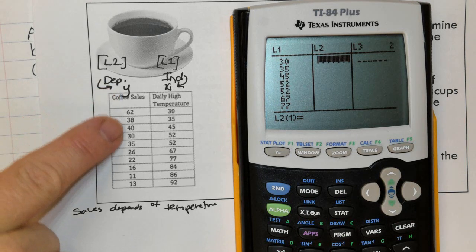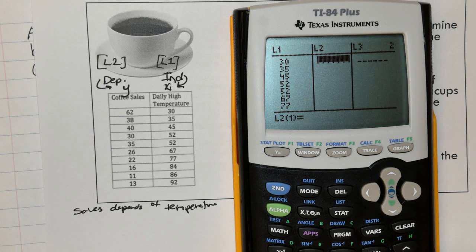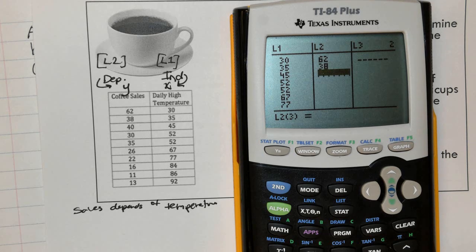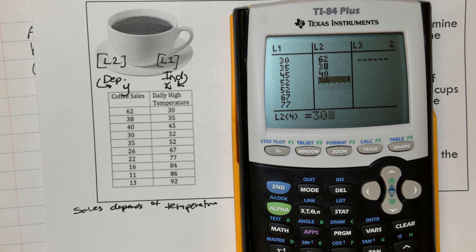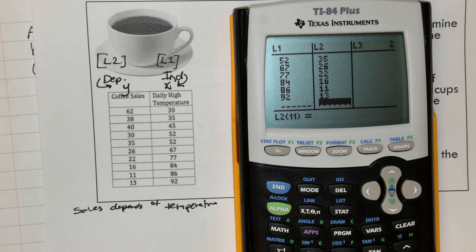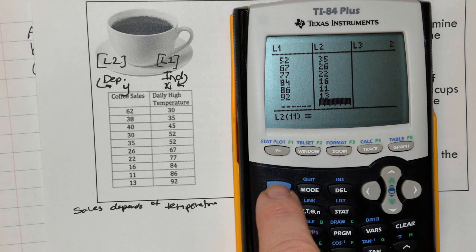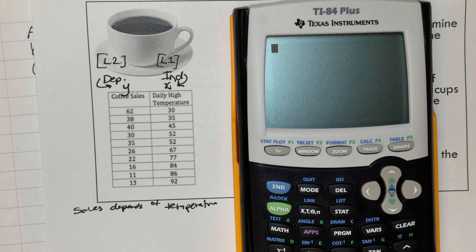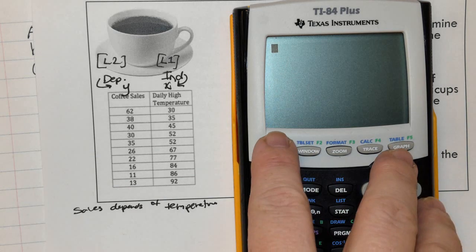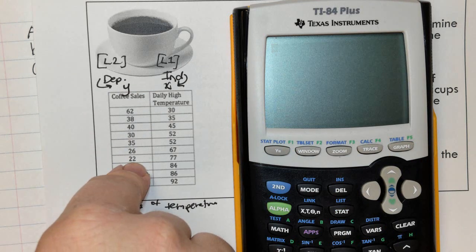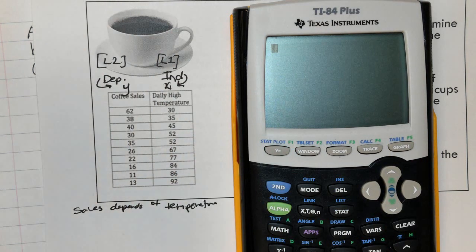Then I'm going to go to the L2 column and put in the corresponding number of coffee sales. Feel free to press pause on the video if you have not completed this yet. Now I need to quit out of this. So you're going to hit the blue button and next to it has quit. And now I need to go find the application in here that will actually take all these points, which I'd like to show you what they look like. Let's first look at this really quick.